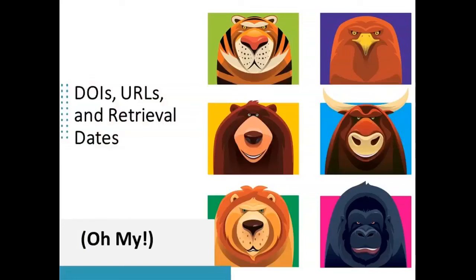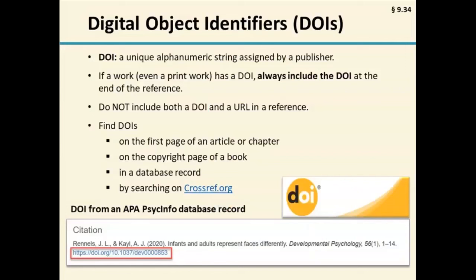Hi, all. As Chelsea mentioned, in this next set of slides I'll be discussing DOIs, URLs, and retrieval dates. This is an area where the 7th edition provides updated guidance and clearer directions on when to include this electronic locator information. When present, the DOI or URL is going to be the final component of your reference list entry. When creating a reference entry, always look to see whether it has a DOI — a digital object identifier — which is a unique alphanumeric string assigned by the publisher that identifies the work and provides a persistent link to its location on the internet. If the work has a DOI, include it as the final piece of your reference entry.